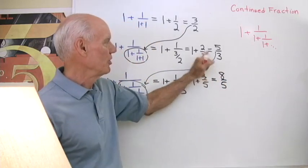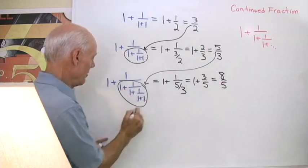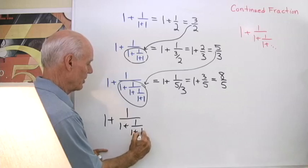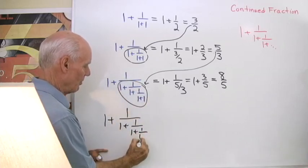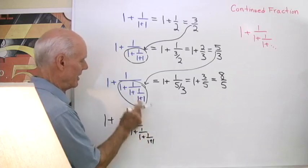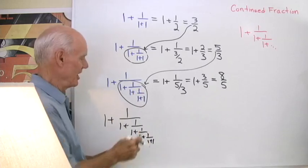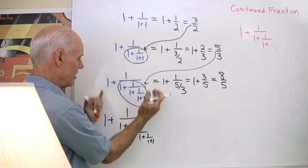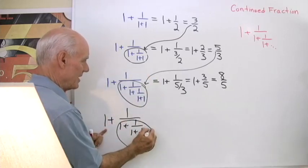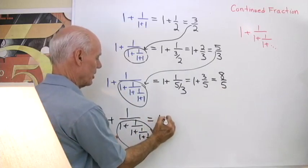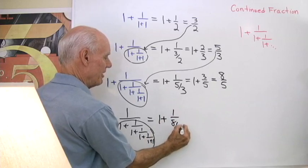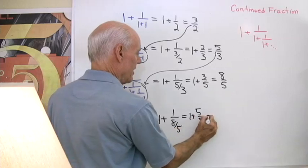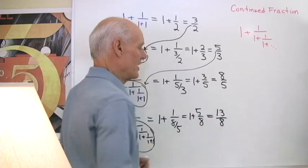Now, do these numbers look familiar? Let's go down one more line. Counting the fraction bars — 1, 2, 3, 4 — this longer expression again contains our previous result of 8 fifths inside it. So I have 1 plus 1 over 8 fifths, that's 1 plus 5 eighths, and 8 eighths plus 5 eighths is 13 eighths. Does this look familiar to you?